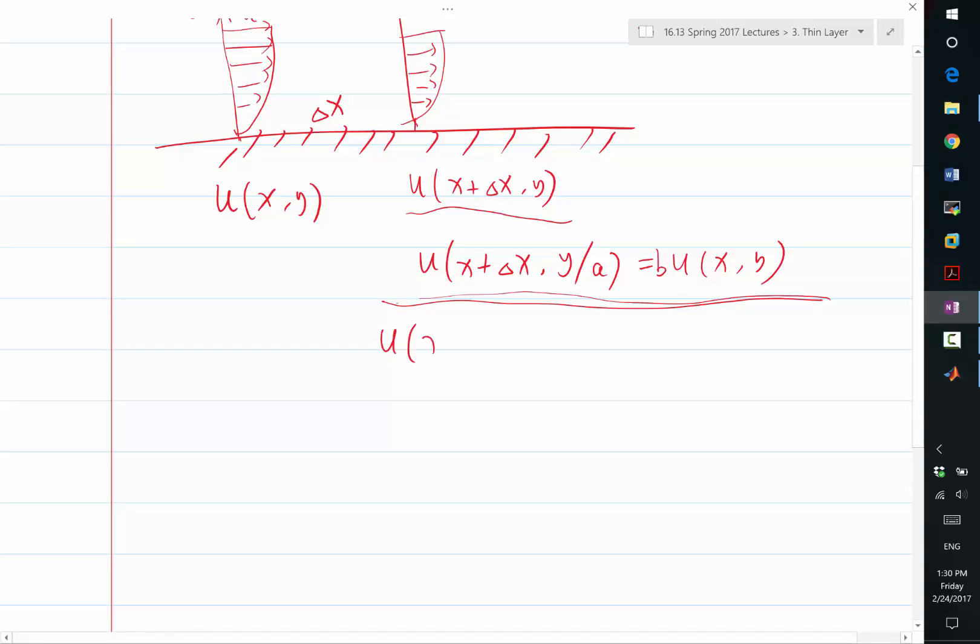So let's say u of x plus dx, where dx is now infinitesimal. I want there exists a y plus epsilon times y, so this is a scaling that is very close to 1, is equal to 1 plus epsilon prime. This is another scaling b corresponding to b times u of x and y.